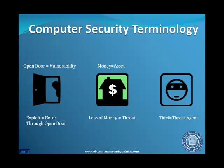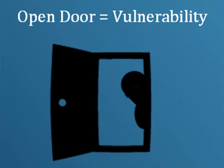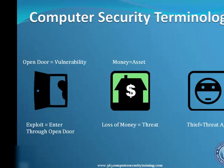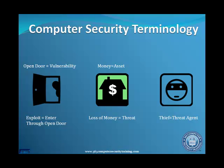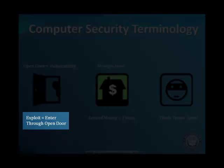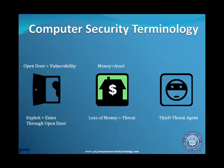A vulnerability is anything that would allow a threat agent unauthorized access to an asset. In the case of the money stored in the house, an open door or unlocked window would be a vulnerability. For information security, a vulnerability could be unpatched software or a weak password. Exploiting a vulnerability would be the thief going through the door, or a hacker using the weak password to log into a computer system.